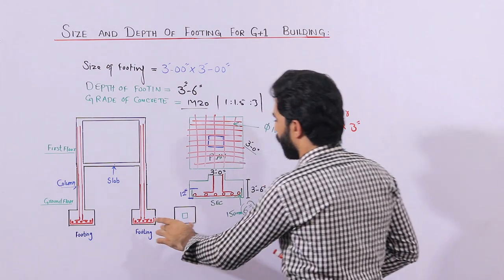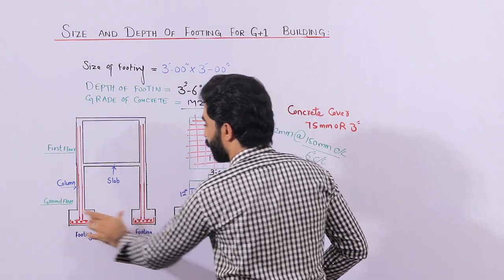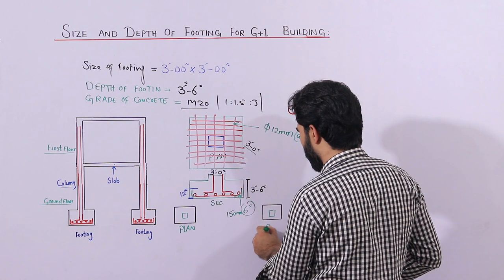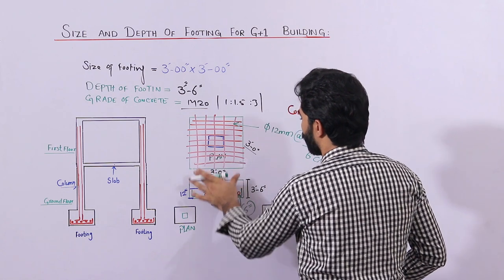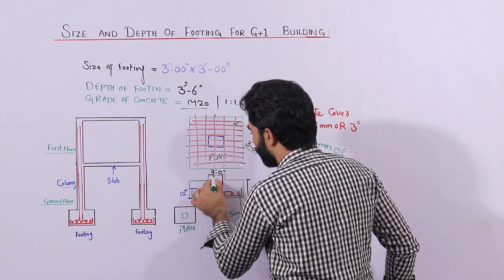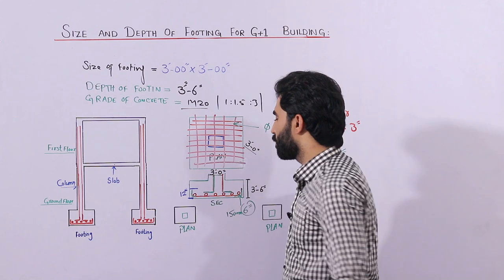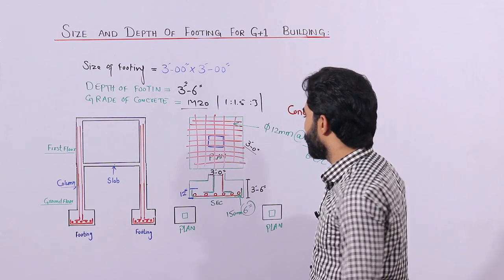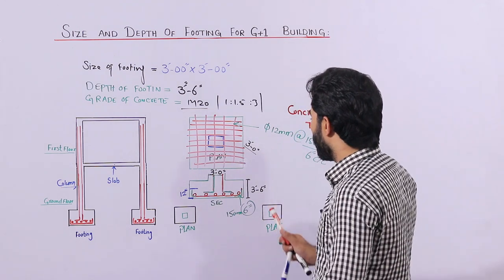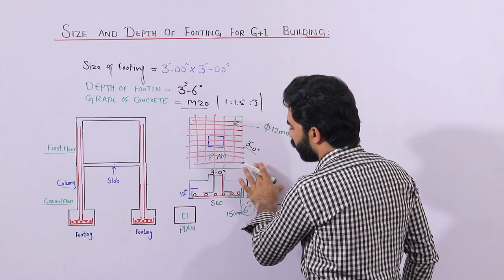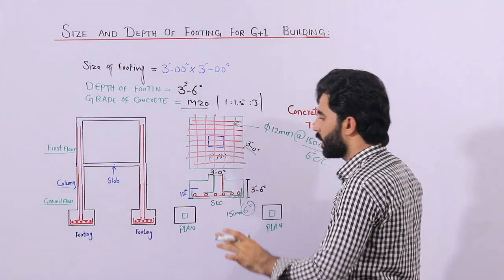This is the frame structure — this is one footing section, this is another footing section, and these are the plans. This is the plan of the footing; this is the other plan. This is a figure I have taken to guide you for steel reinforcement. The leg of the steel reinforcement should be placed on top of the steel reinforcement. For both main bar and distribution bar, you can use 150mm by 150mm spacing.